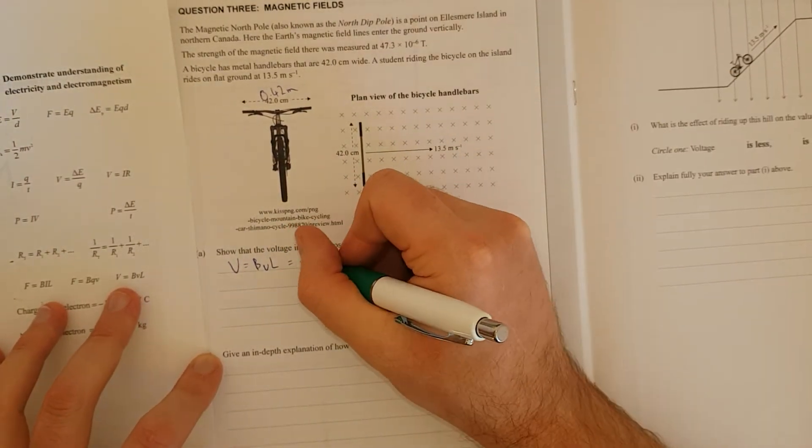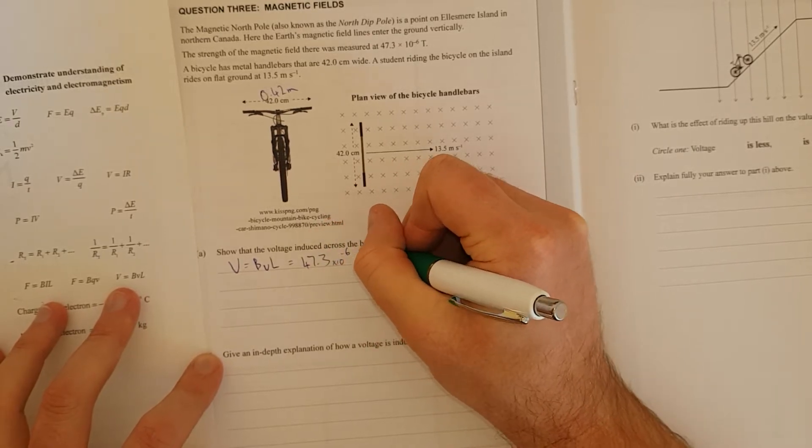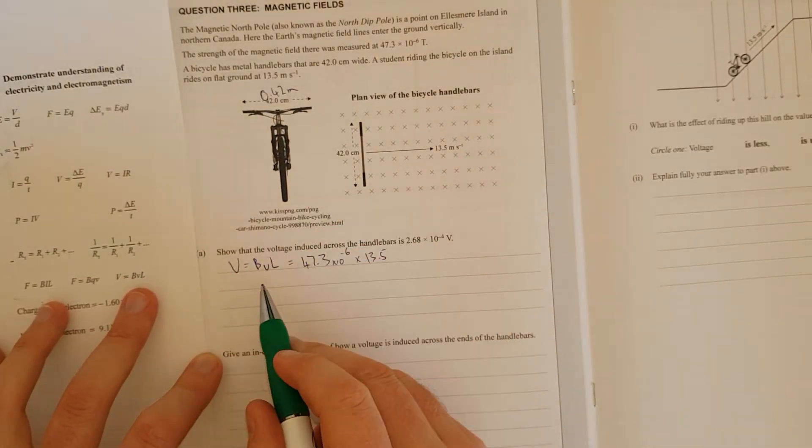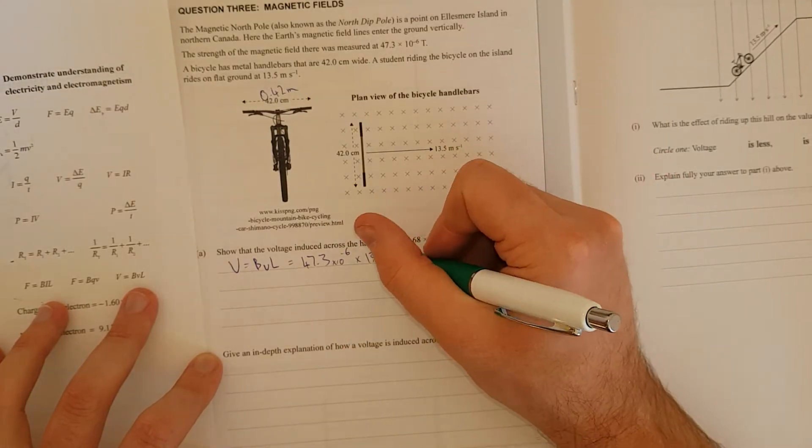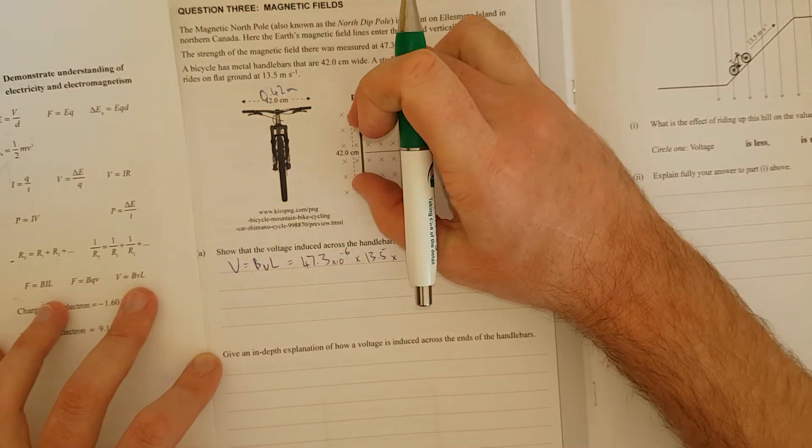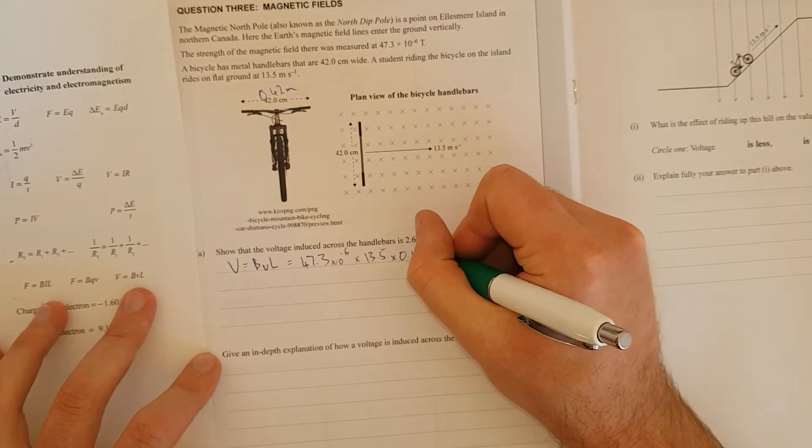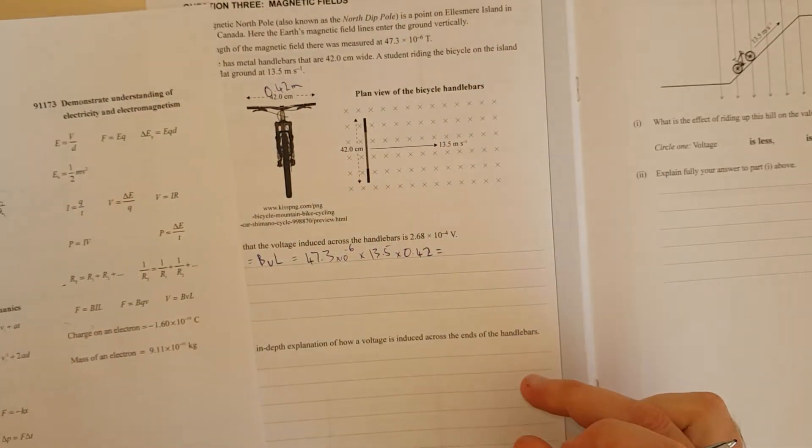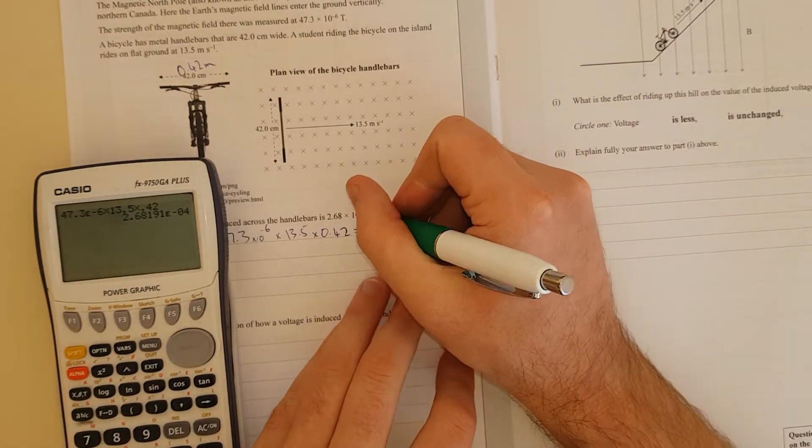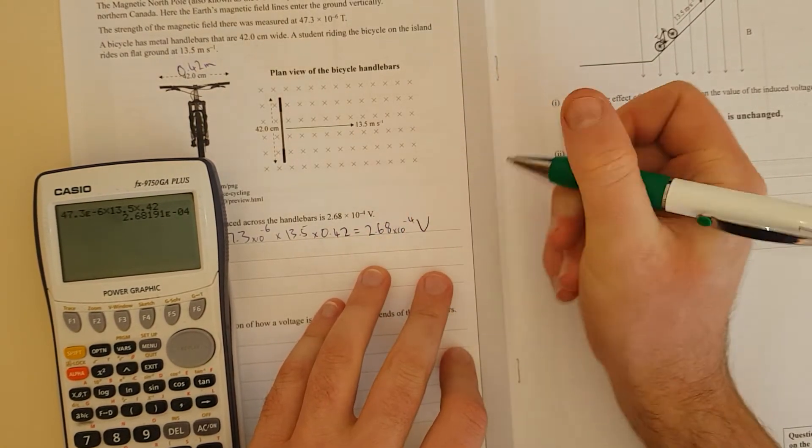That is going to be equal to tiny magnetic field 47.3 times 10 to the negative 6 Tesla times the velocity is 13.5. This is a show question, so you need to have the formula, the substitution when you put the numbers in for the formula, times the length that cuts through the magnetic field. If some of this was outside the field, you only have to use the stuff that's in the field. It's all in the field and it has to be SI units. And we do, in fact, get 2.68 times 10 to the negative 4 volts.